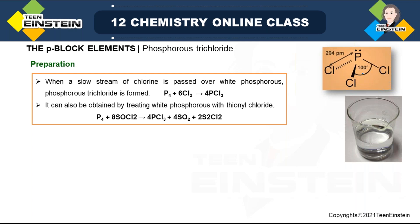Phosphorus trichloride (PCl3): it has pyramidal/tetrahedral geometry with one lone pair, and the bond angle is less than 109° due to lone pair–bond pair repulsion. Preparation: a slow stream of Cl2 gas passed over white phosphorus gives P4 + 6Cl2 → 4PCl3. It can also be made by treating white phosphorus with thionyl chloride (SOCl2), which acts as a chlorinating agent: P4 + SOCl2 → PCl3 + SO2.